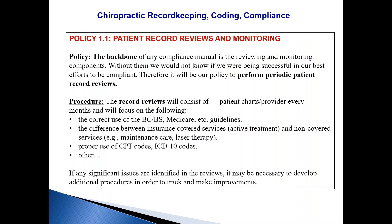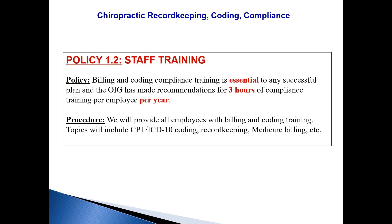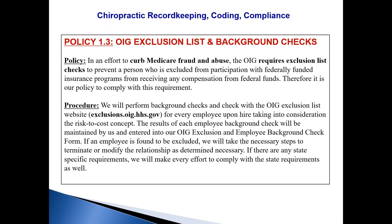You want to have policies and procedures — here's an actual example from our manual showing how to do record reviews, staff training, and the exclusions list. If you see Medicare patients, go to the exclusions list at exclusions.oig.hhs.gov and put your name in there to make sure you haven't been excluded. This applies to anyone who has anything to do with Medicare patients — your front desk receptionist, your CA entering CPT codes into your EHR. If you're about to hire Dr. Douglas as an associate chiropractor, put his name in the exclusions list before he starts.